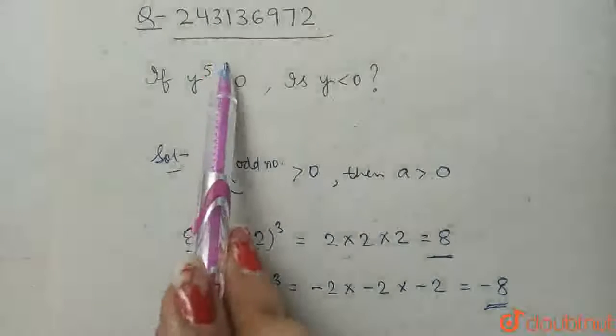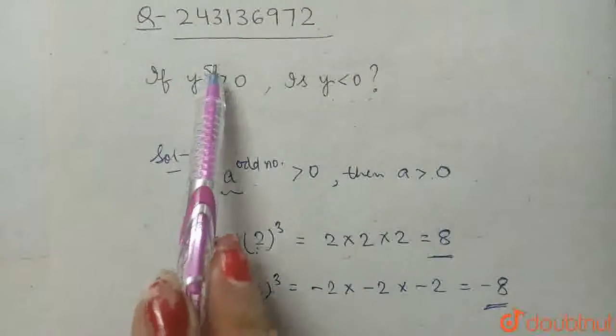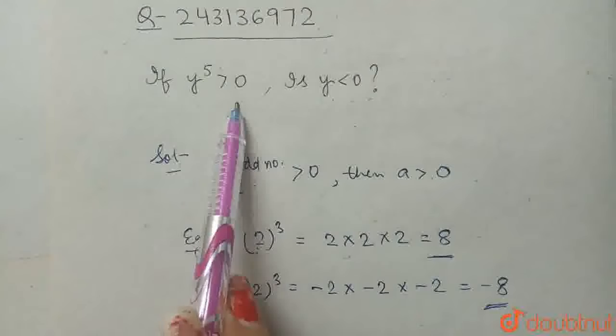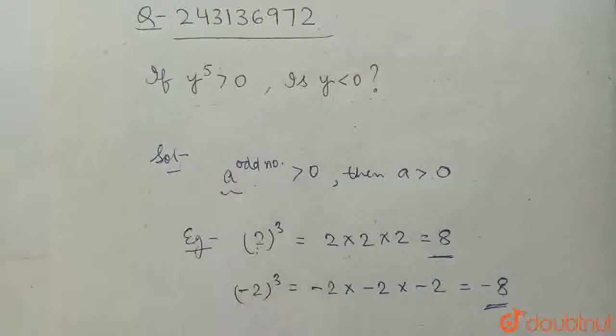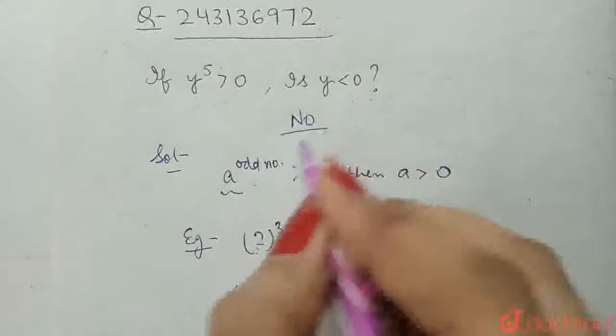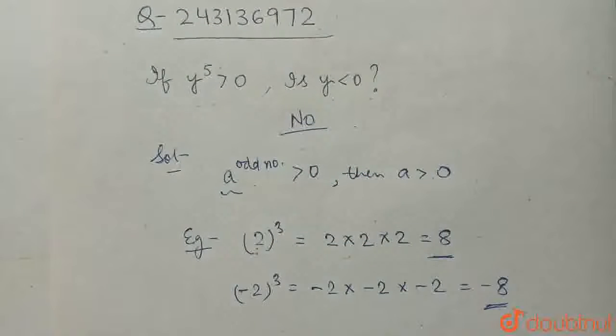So, if y raised to power 5, that is, y raised to the power of an odd number is greater than 0, that is positive, then y cannot be negative. So, answer is no. That is, y cannot be negative. Y is always positive in this case.